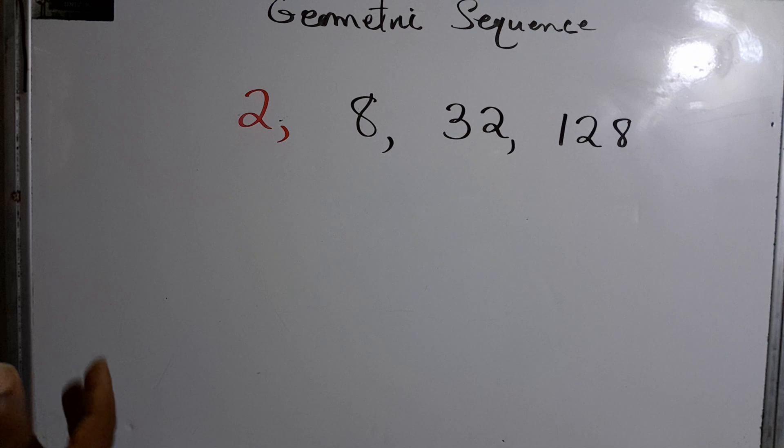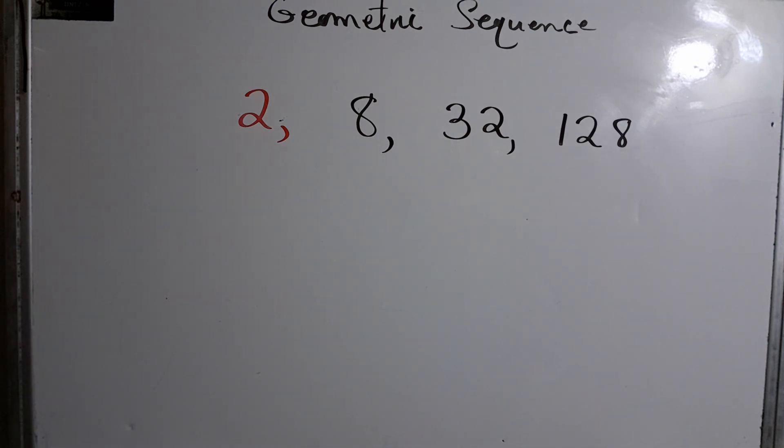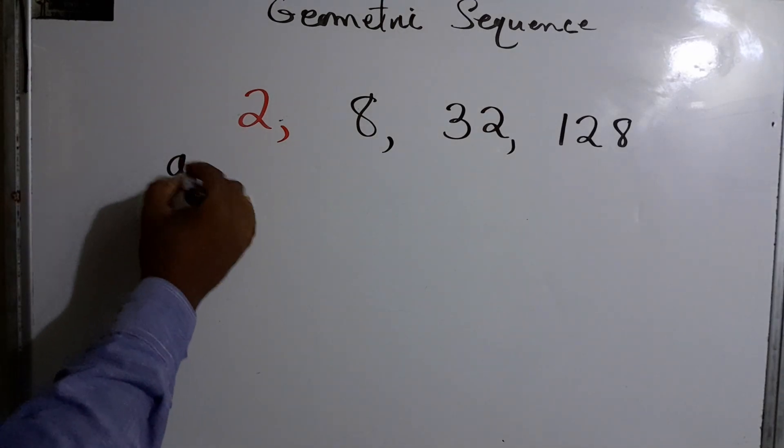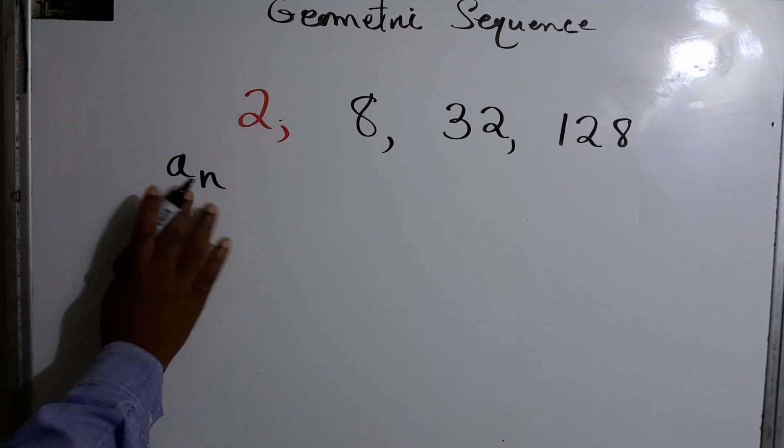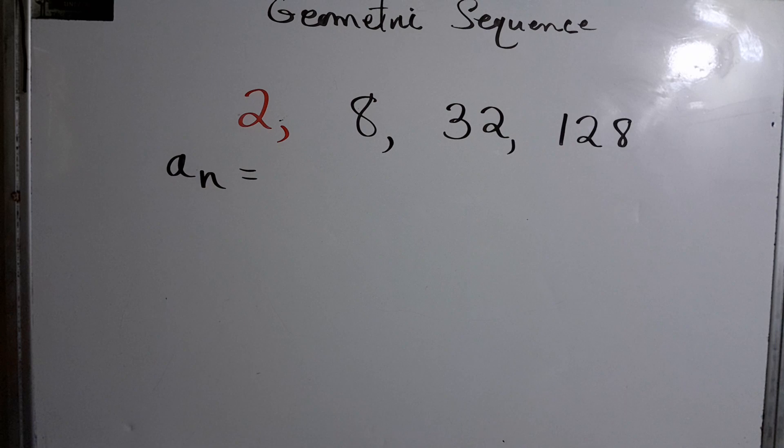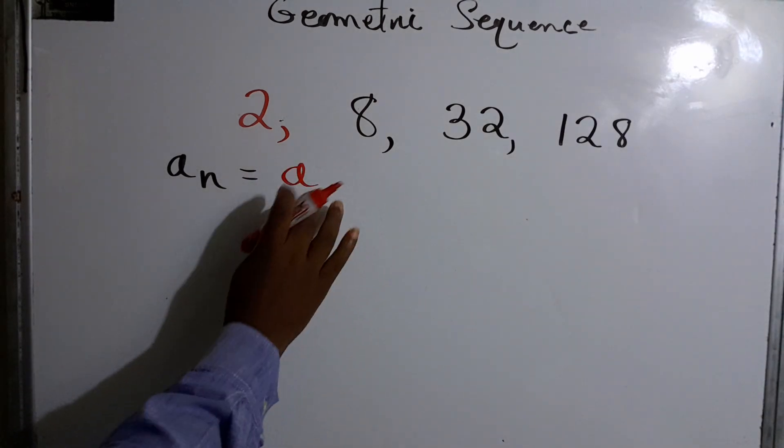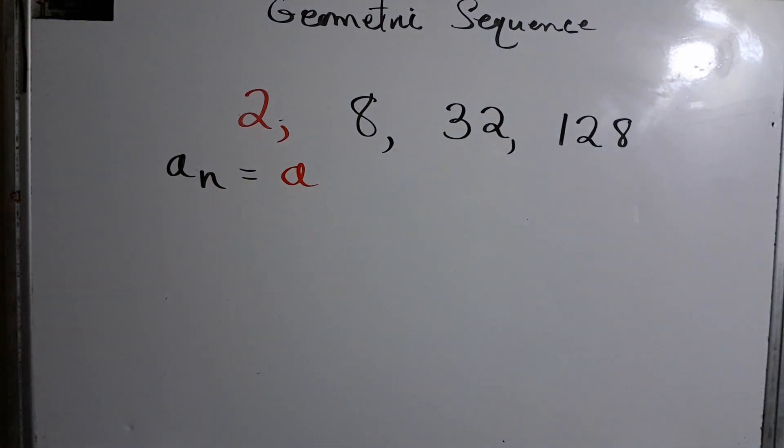It's a sequence and you can be asked to find, for example, the tenth term or the hundredth term. So this is how it is done. We work with this formula which says a to the n, and this n represents the number or term that we're looking for. But what is a? A represents the first term.